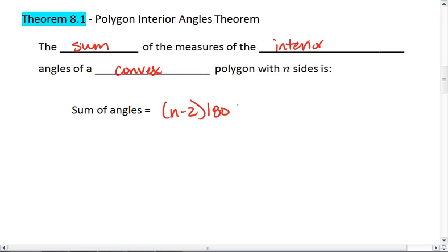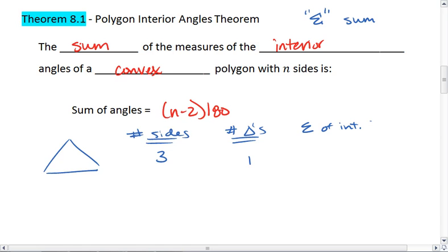Let's look at why this is. So we know if we have a triangle, we have three sides, and we'll say that makes one triangle. So the sum, and yes, this little symbol here means sum, kind of looks like a really angular e.